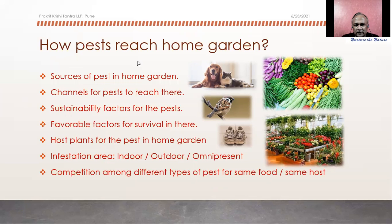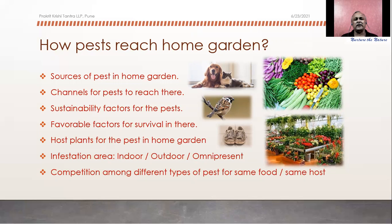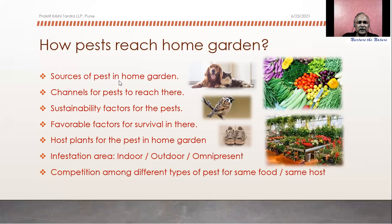Coming to pests in our home garden — first let us understand how a pest reaches a home garden. For example, in any metro city where we set up a garden on the 30th or 50th floor of a tall building, suddenly we find some pest or disease. From where has it come? In a farmer's field, crop after crop provides the host and the pest life cycle continues. But here, nothing was present before — so where did it come from? We need to identify the source of pests in the home garden.